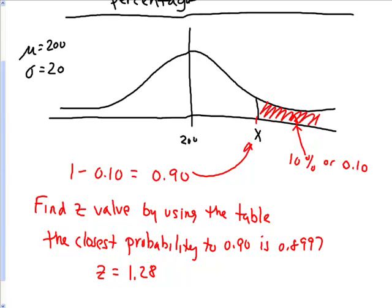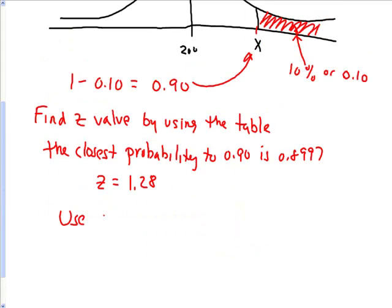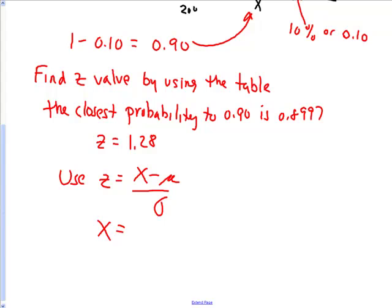Now that we know what the z value is, we can use our formula z equals x minus the mean over the standard deviation to find x, or x equals z times the standard deviation plus the mean.